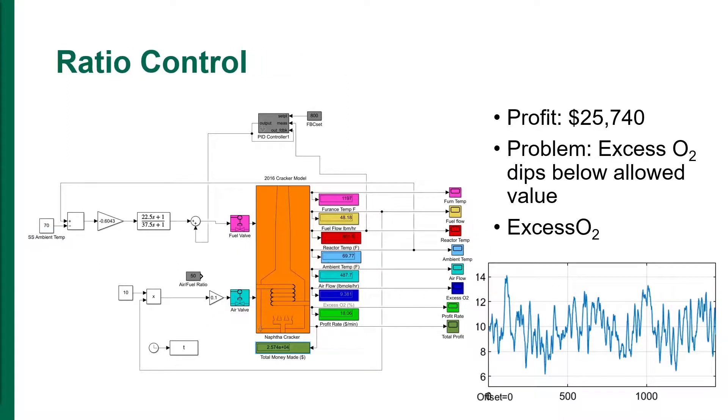In order to control the excess O2 at the set point, a ratio controller between the fuel flow and the air flow was implemented. The ratio of the air flow to the fuel flow is 10. The resulting profit was $25,740. However, the excess O2 crossed the minimum allowable value multiple times, which resulted in safety issues. Thus, the next objective is to control the excess O2.